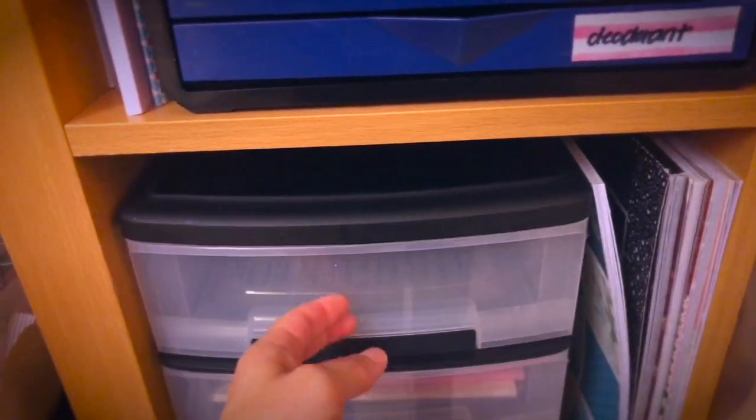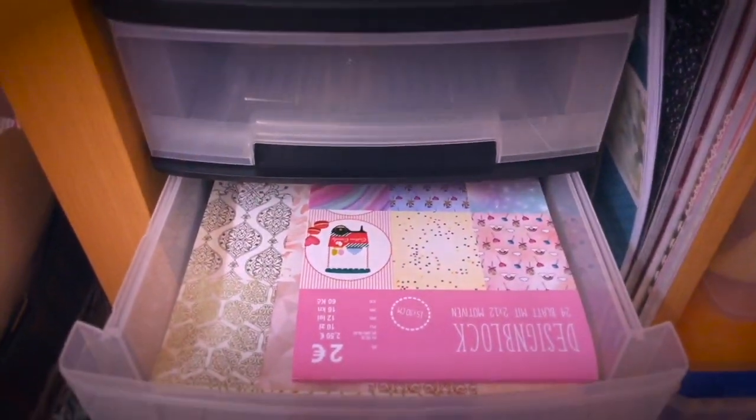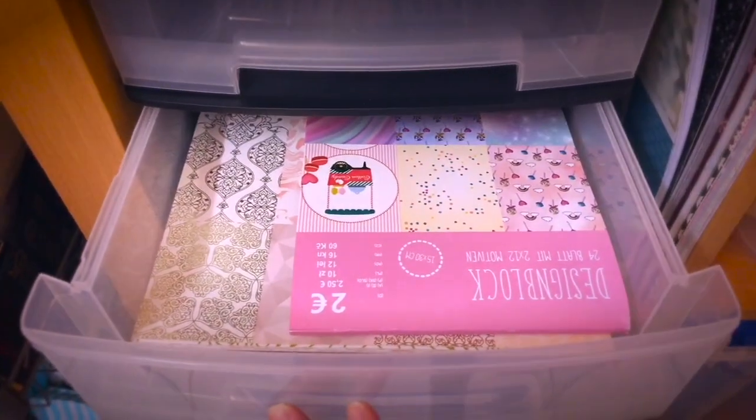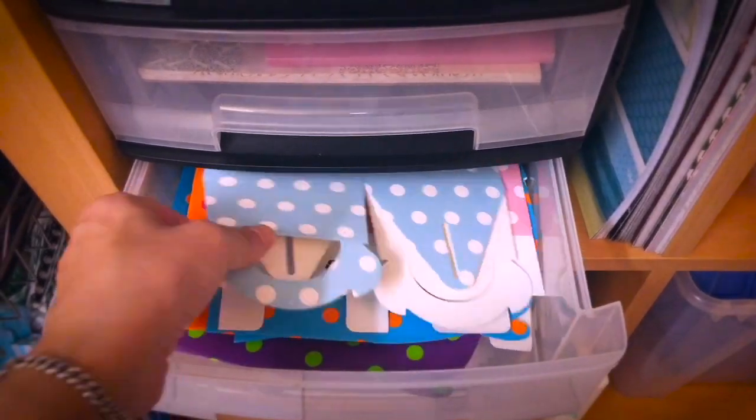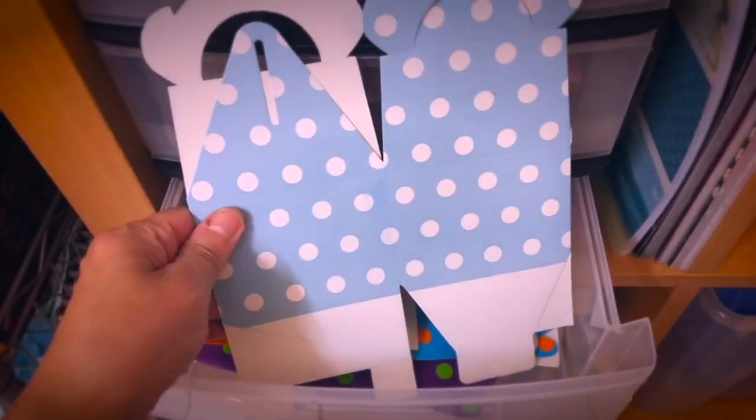Then here, more drawers where I keep free spaces always and then I have small format design paper and then more gift boxes. These ones here look like a little McDonald's Happy Meal box.